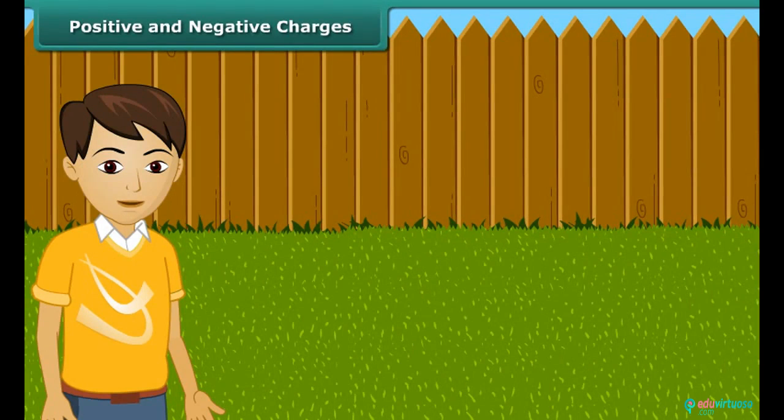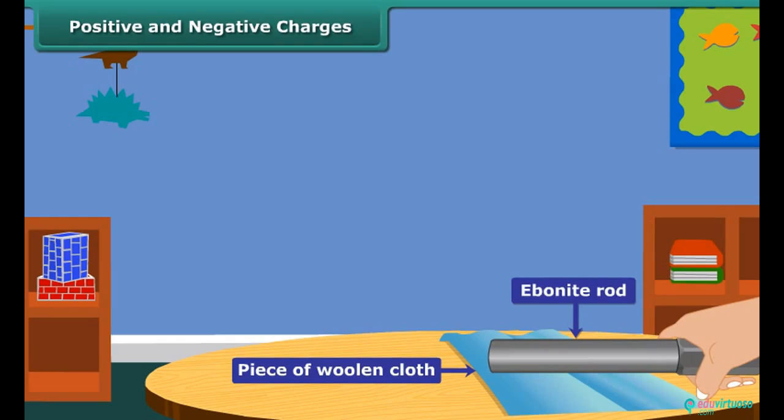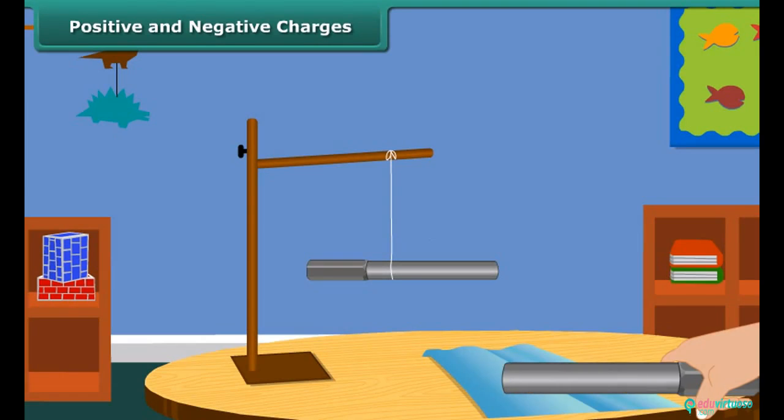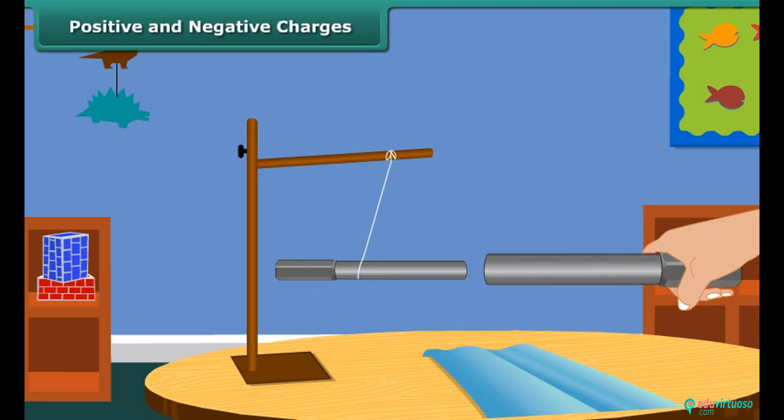Let us perform an activity to understand positive and negative charges. Take an ebonite rod and rub it with a piece of woolen cloth. Now suspend the rod by tying a thread through its middle. Now charge another ebonite rod in the same way and bring it close to the suspended rod. What do you notice? The suspended rod moves away from the second one.